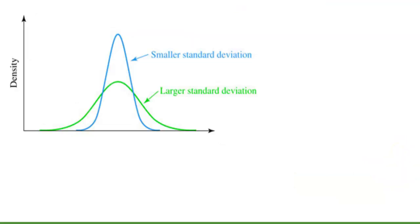The total area under the normal curve is 1, but normal curves can have different shapes. Here are two examples: one is taller and one is wider. The taller blue curve represents a distribution with a smaller standard deviation, meaning data values are closer to each other and to the center. The wider green curve represents a distribution with a larger standard deviation, so data is more spread out. But the total area under each curve is still 1.